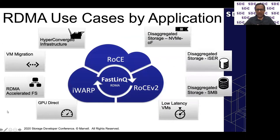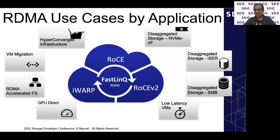Let's first look at use cases for RDMA. RDMA comes in many variants: RoCE v1, which is InfiniBand over Ethernet; RoCE v2, the routable version using UDP; and iWARP. Broadly, most RDMA use cases focus on transporting storage across the wire. Starting from the top, there's disaggregated storage with NVMe over Fabrics — the standard defined by the NVMe Express group, with a bunch of products especially with NVMe over RoCE v2. There are also legacy use cases like iSCSI extensions over RDMA, though deployment has been limited.